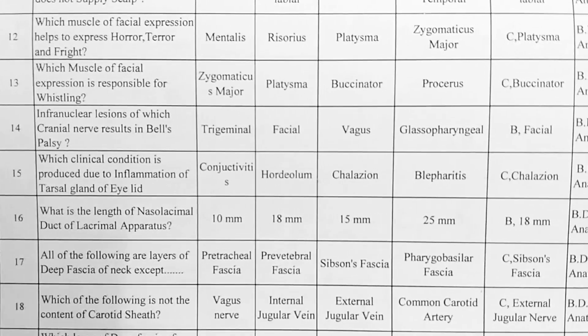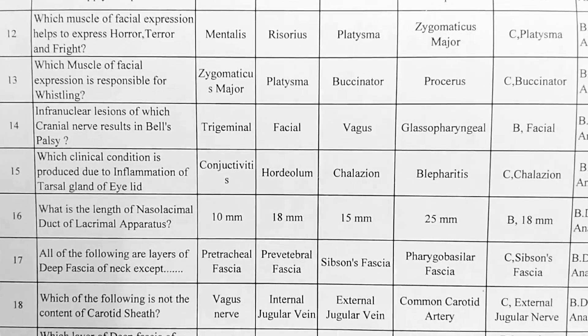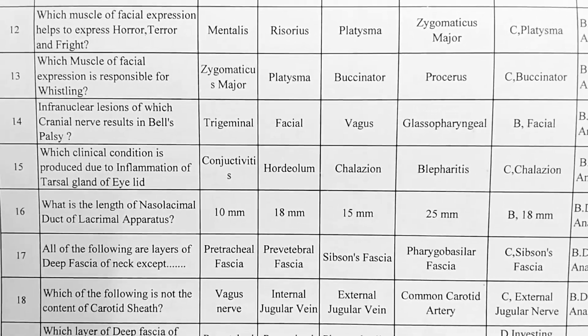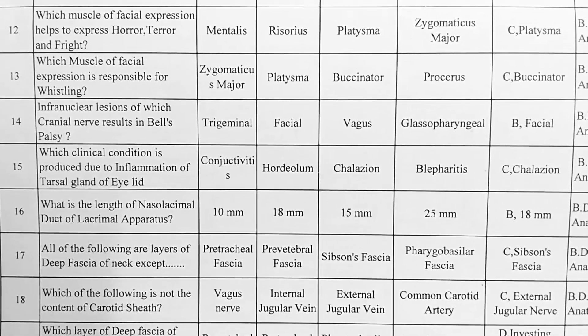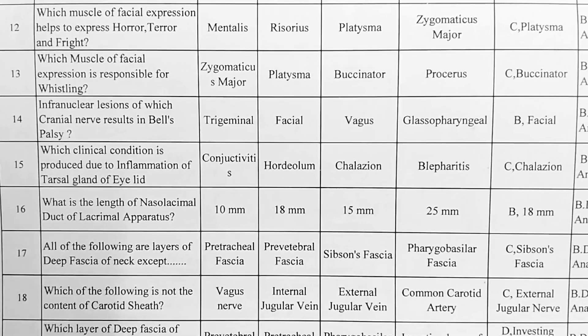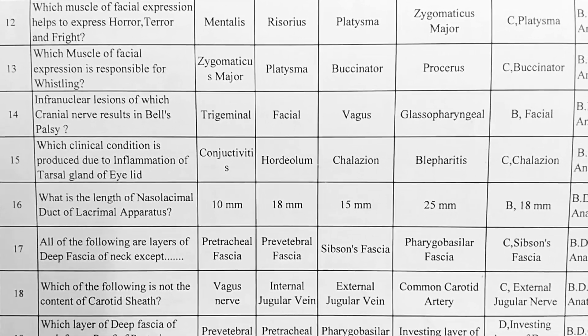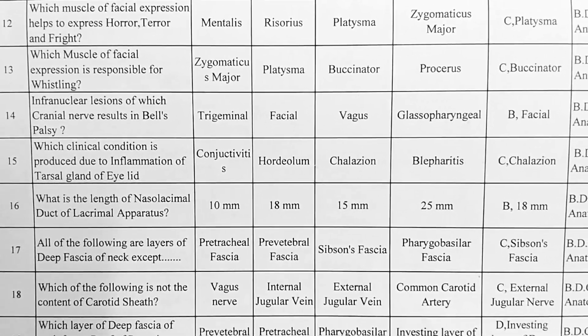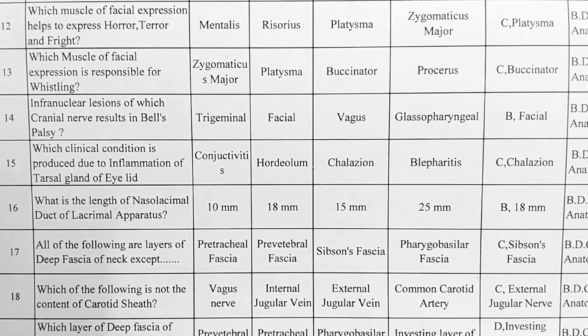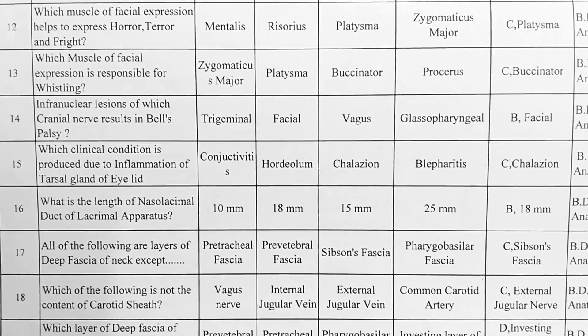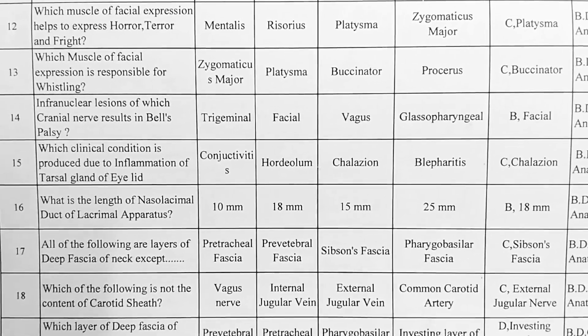Next. Which muscle of facial expression is responsible for whistling? Options — A: zygomaticus major, B: platysma, C: buccinator, D: procerus. Option C is correct, buccinator.